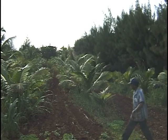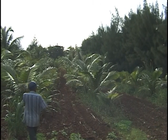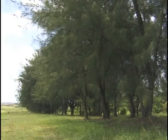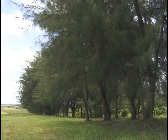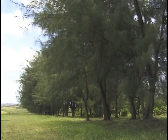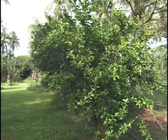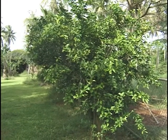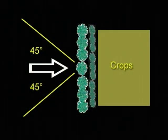Proper orientation is essential for effective protection. The ideal windbreak is oriented perpendicular to the prevailing wind direction. If the prevailing wind comes from only one direction, a single leg windbreak can be used. It should be oriented within 45 degrees of being perpendicular.